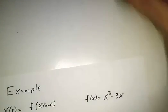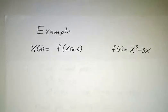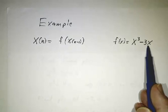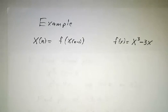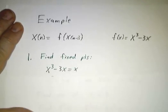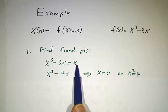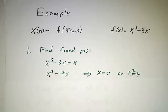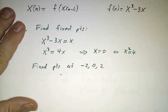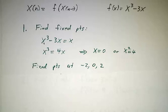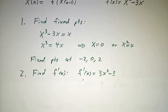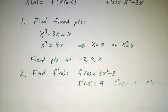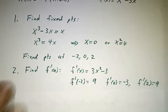So for example, suppose we have x today is x cubed minus 3x yesterday. Then we find our fixed points. We solve x cubed minus 3x equals x. So x cubed equals 4x. So either x is 0 or x squared equals 4, and our solutions are negative 2, 0 and 2. Then we compute our derivative. The derivative of x cubed minus 3x is 3x squared minus 3.